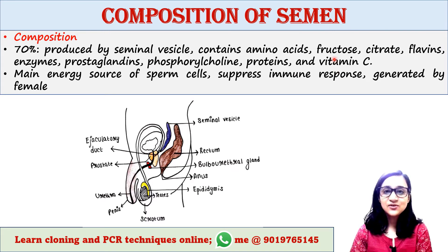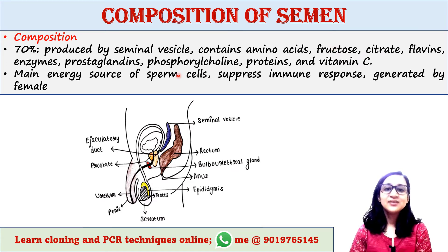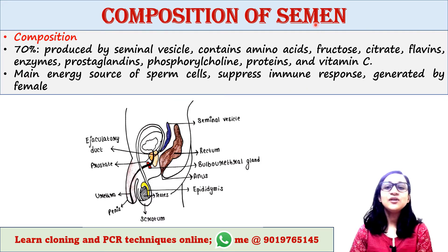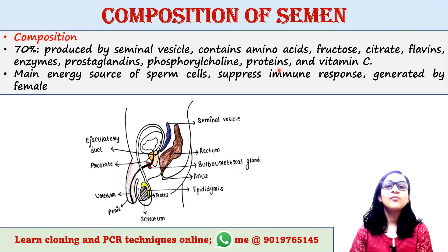These are the main energy source of sperm cells because the seminal vesicle fluid contains fructose, a carbohydrate, which is a great energy source. Sperm needs energy while traveling and can get it from fructose. These substances also suppress the immune response generated by the female, since the female reproductive tract is patrolled by immune cells that attack foreign objects, allowing sperm to move safely.